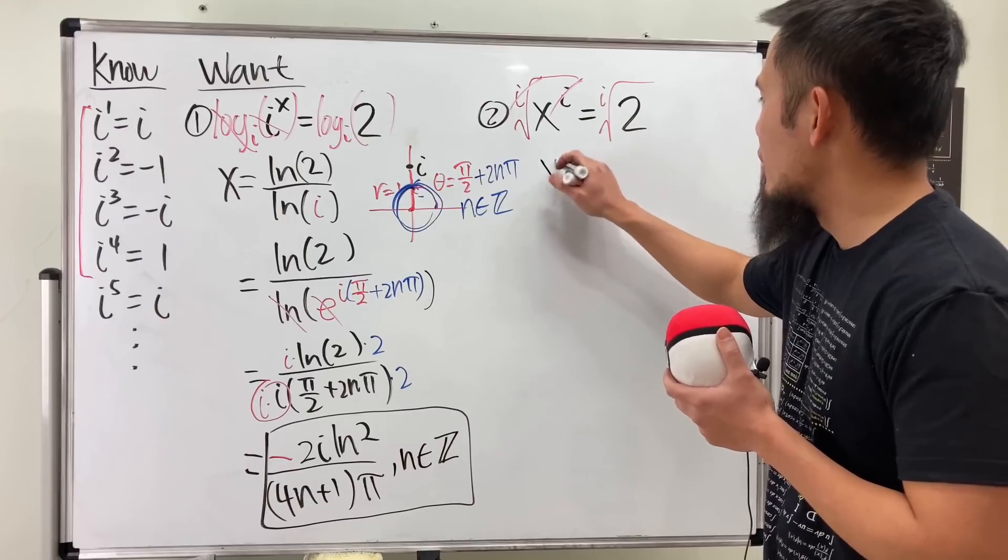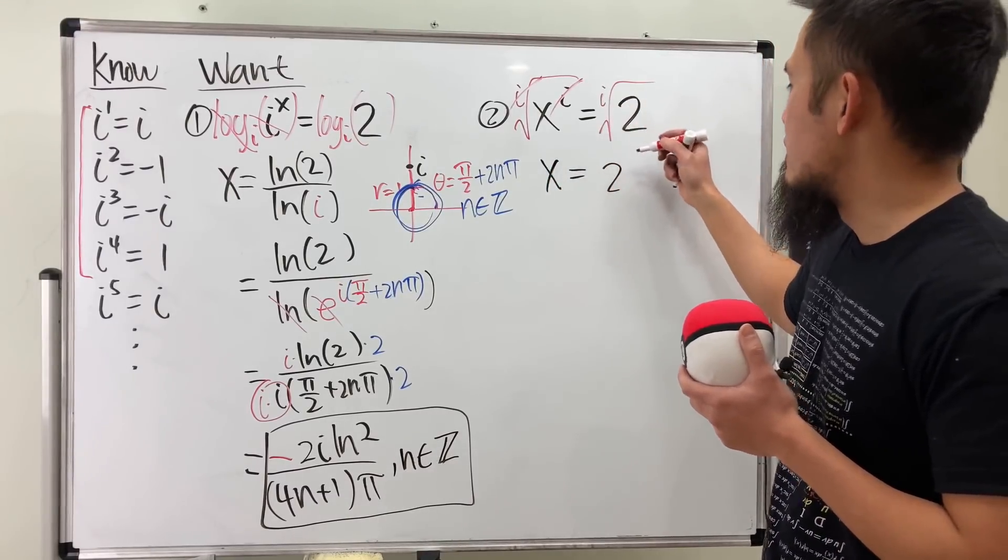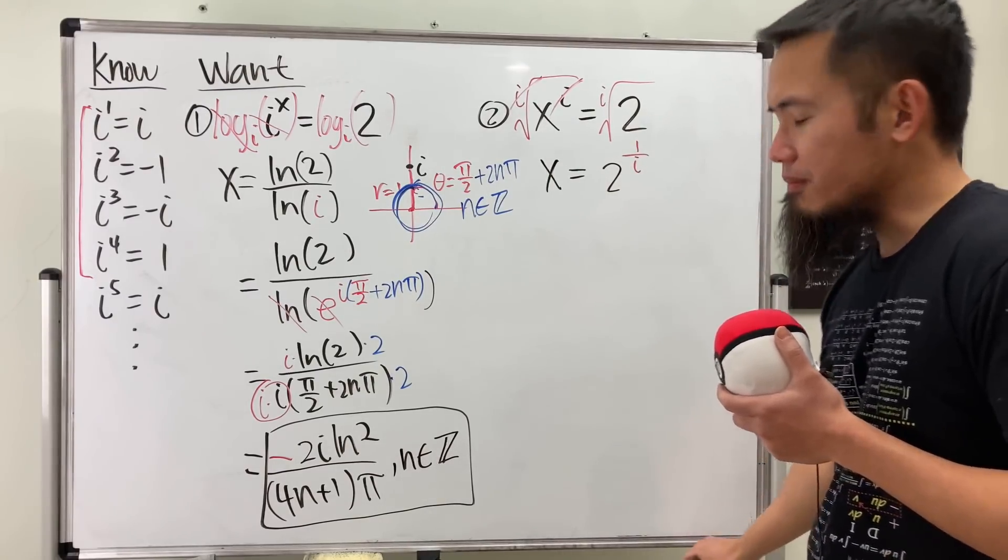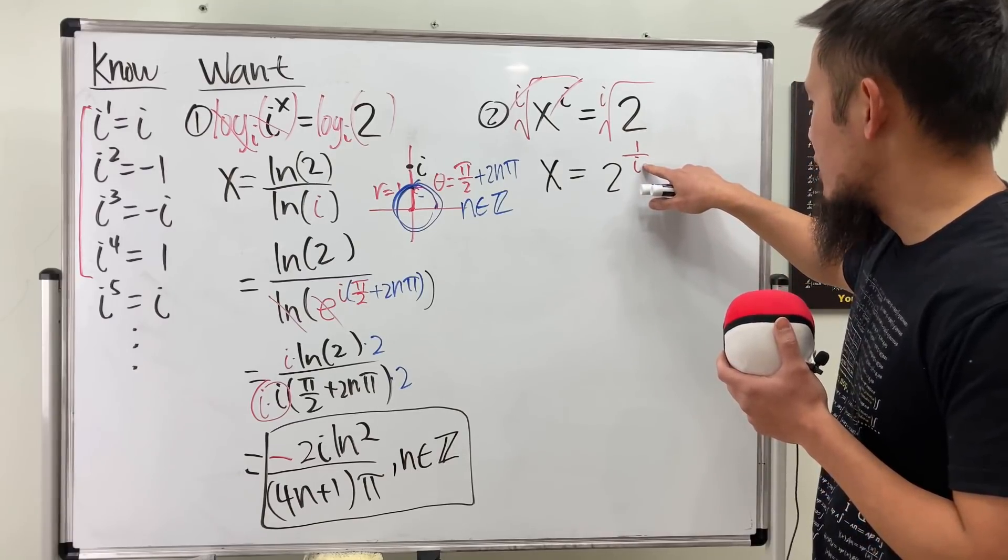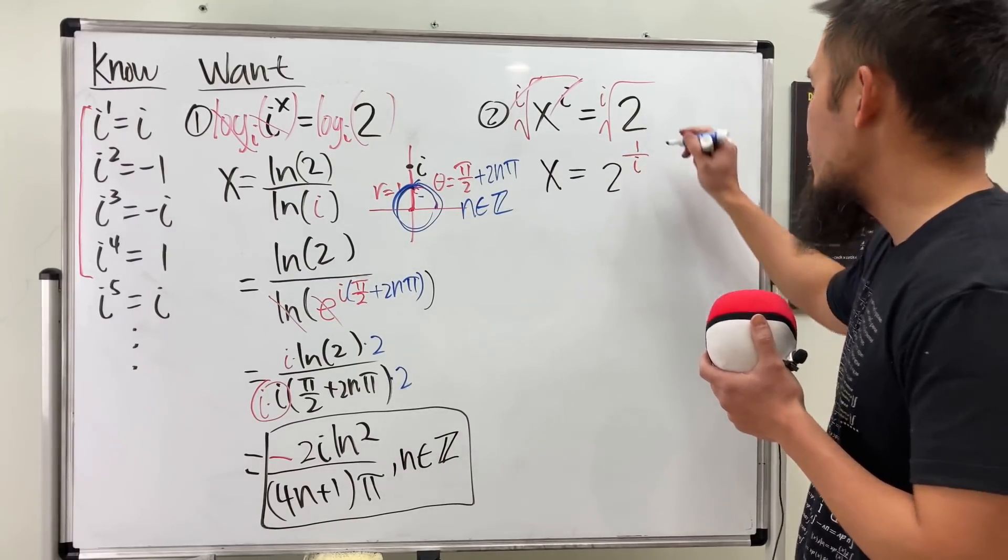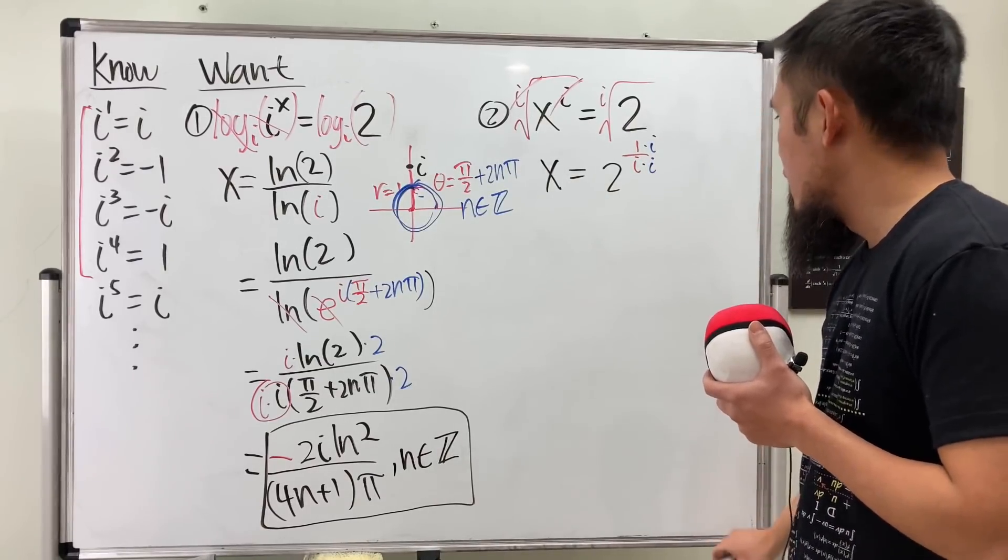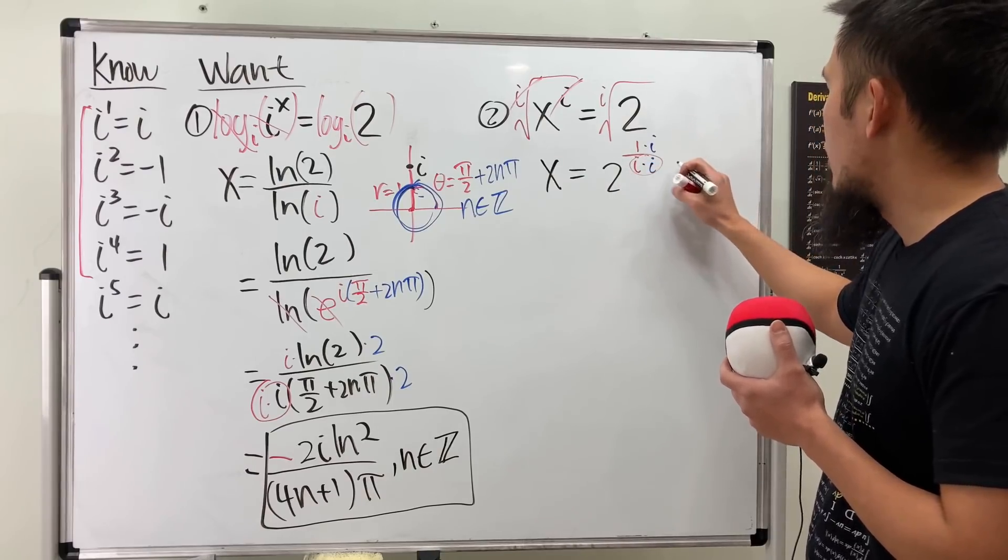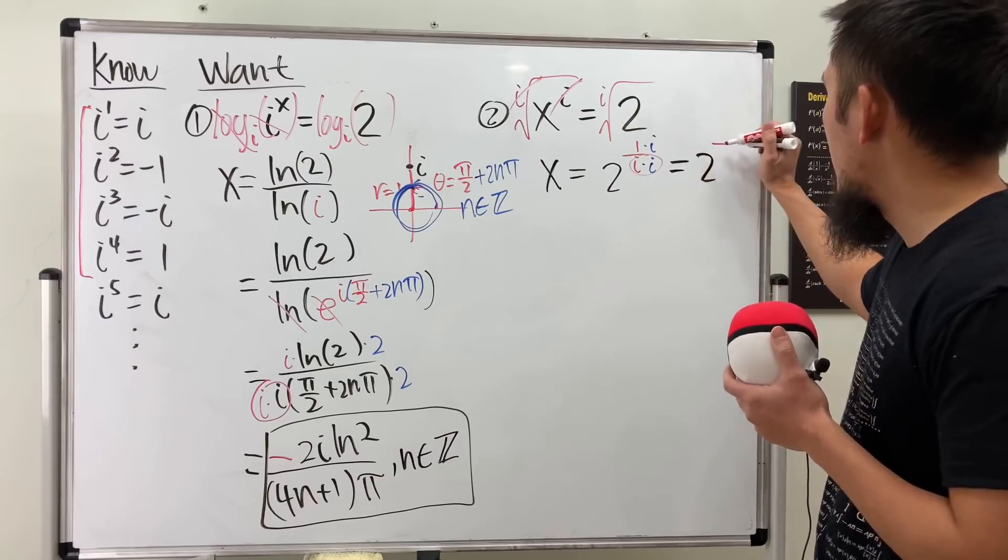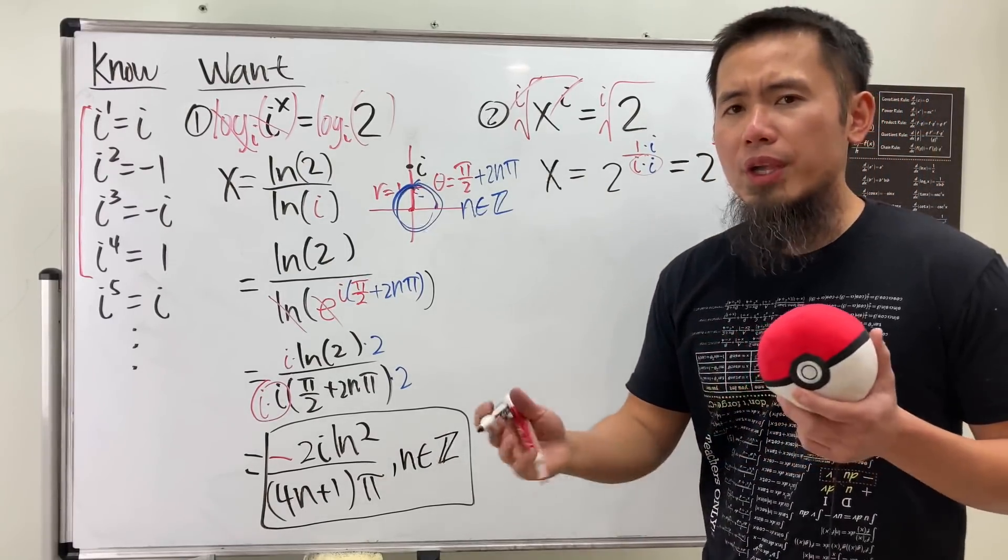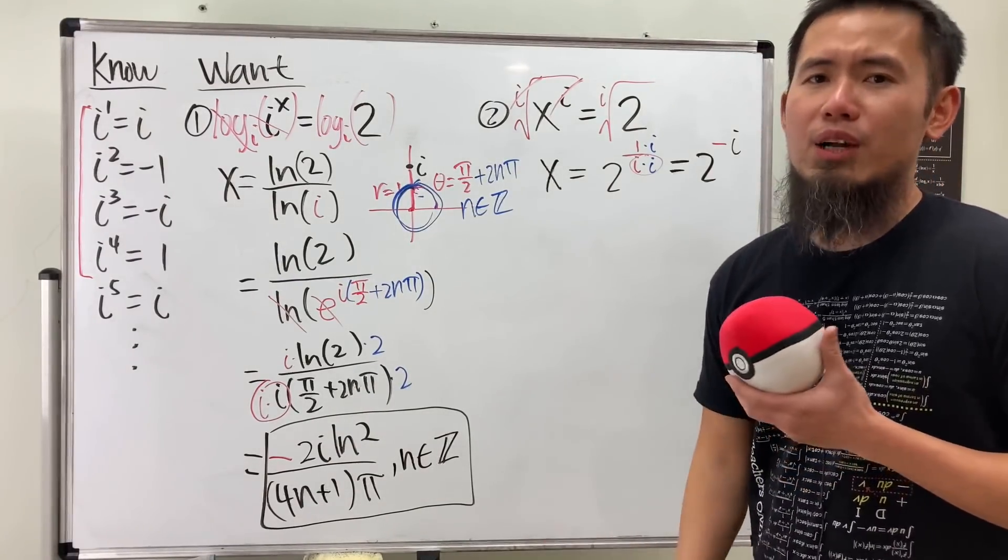Anyway, this right here will give us x and this is going to be 2. Of course, the i-th root is the same as 1 over i's power. But again, we have the same issue. I don't want i to be on the bottom, even though this is the answer already. I will still prefer i to be on the top. So multiply the bottom and top by i. This right here is again negative 1. So all in all, we get 2 and then we have negative i's power on the top.